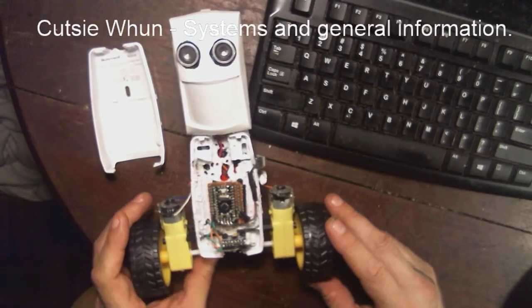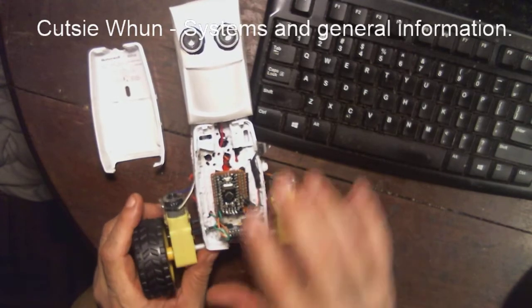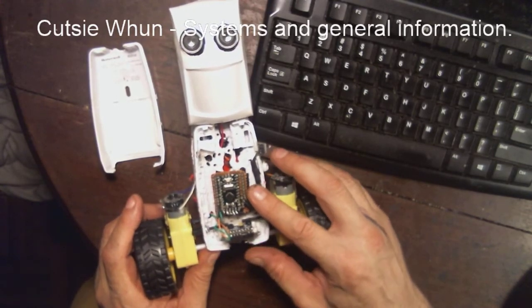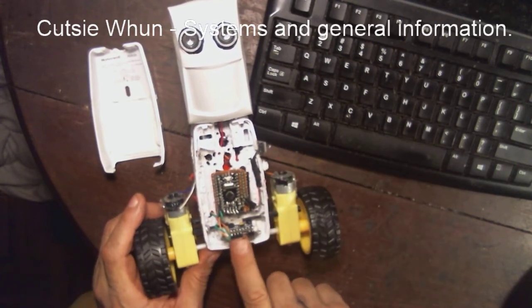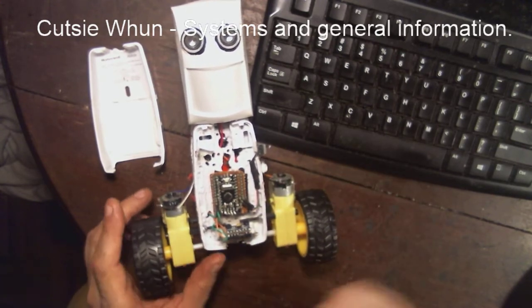Inside his front is where the brain is. It's a Pro Mini, 5 volt. He has a 6050 gyro right down here.